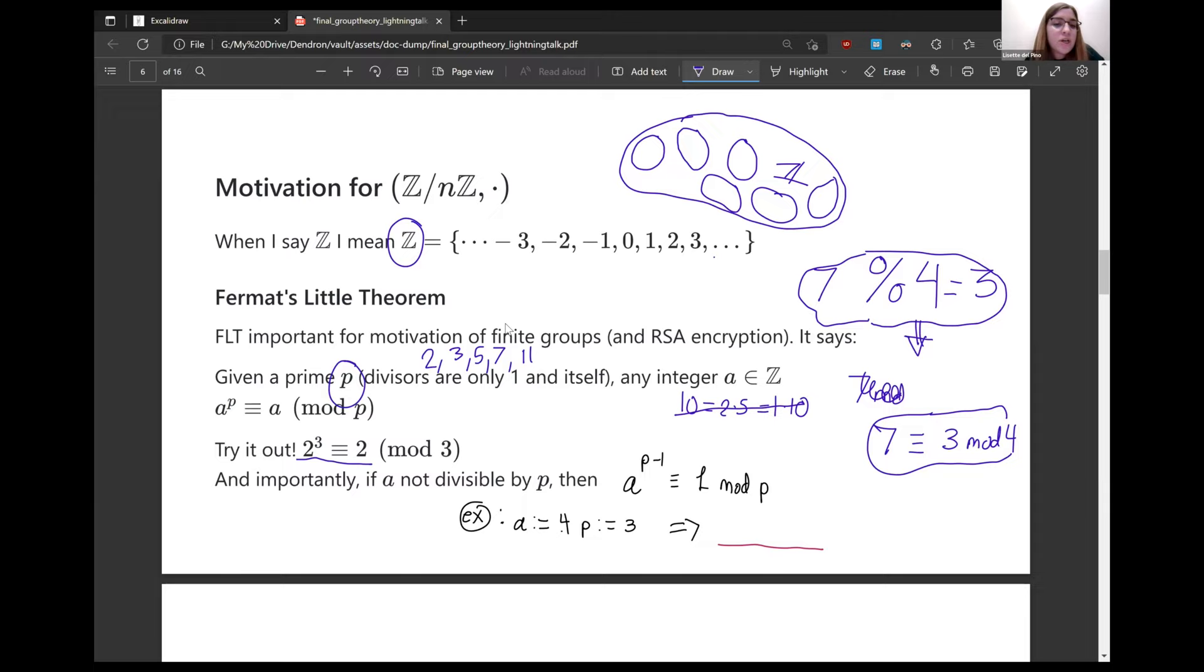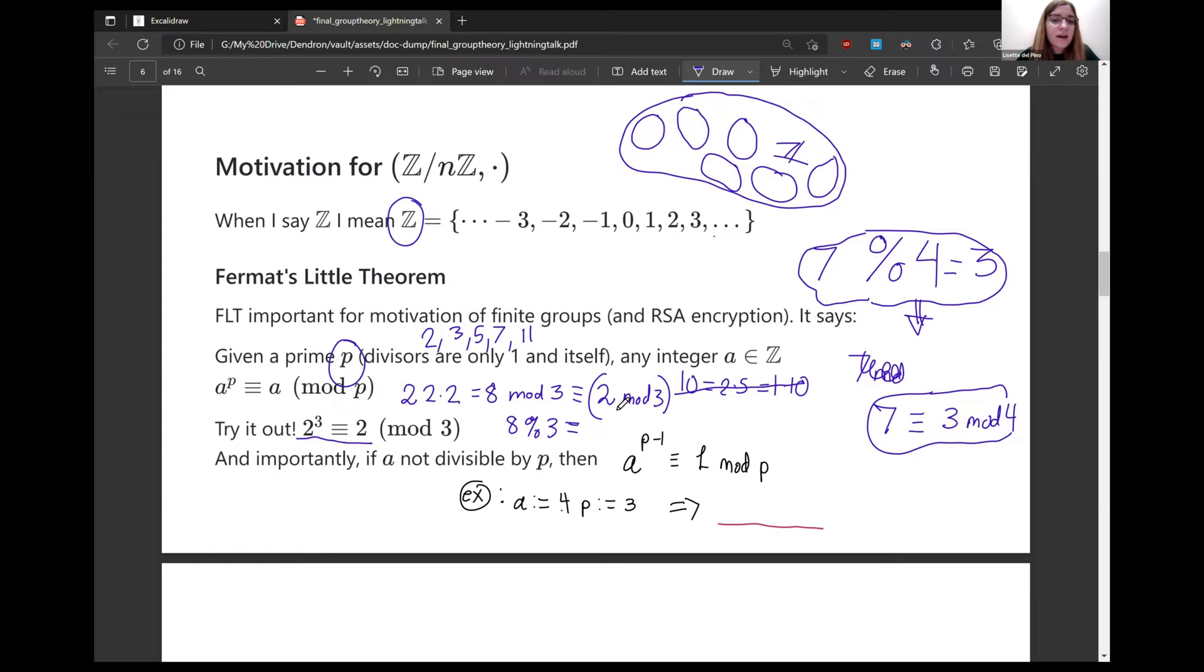So Fermat said, given a prime, the divisors are only one and itself, and any integer in this set, A to the P is congruent to A mod P. And we can try this out. So this is by no means a proof, but it's just an example. Two to the three is two times two times two, that's eight. Well, that modulo three, this is the same as dividing this by three with the mod operator. That is congruent to two, because six and then the remainder is two.